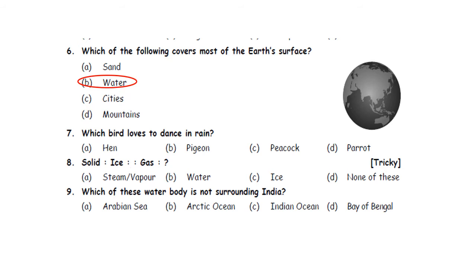Question seven: Which bird loves to dance in rain? A. Hen. B. Pigeon. C. Peacock. D. Parrot. The bird which loves to dance in rain is the peacock. Peacock is also our national bird. It has long feathers and it enjoys dancing in rain. So option C is the correct answer.